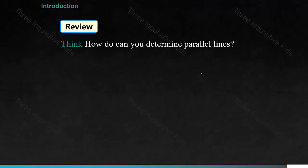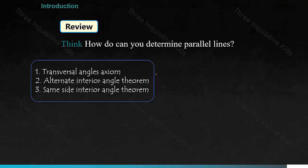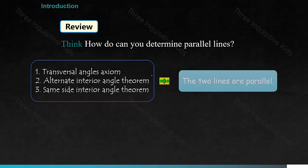How can you determine parallel lines? We learned about the transversal angles axiom, the alternate interior angle theorem, and the same side interior angle theorem. These three all lead to the conclusion that the two lines are parallel.